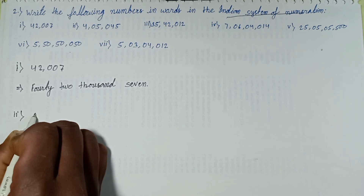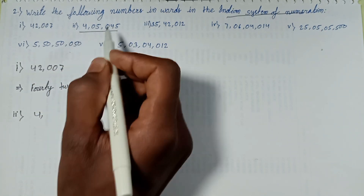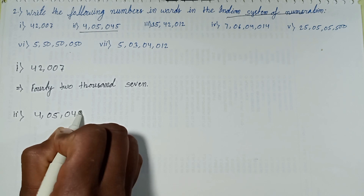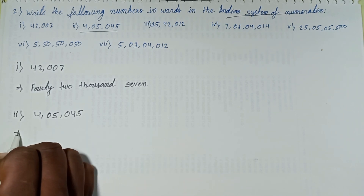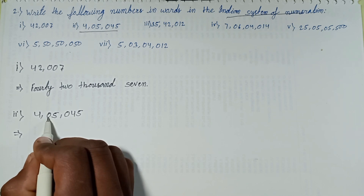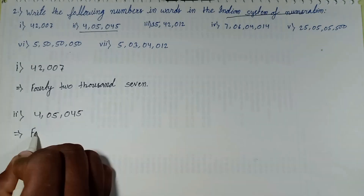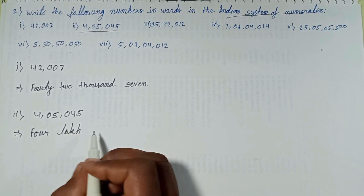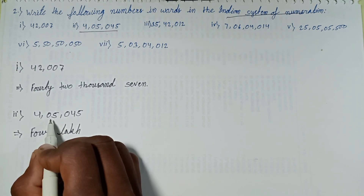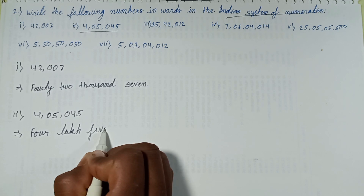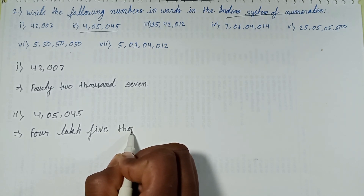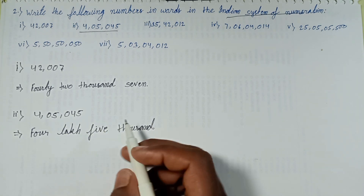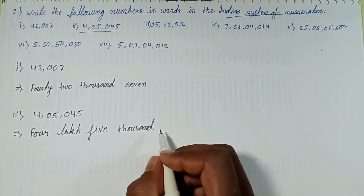Next question: 4,05,045. Count from the right — ones, tens, hundreds, thousands, ten thousands, lakhs. We get four lakhs, five thousand, and forty-five. Answer: Four lakh five thousand forty-five.